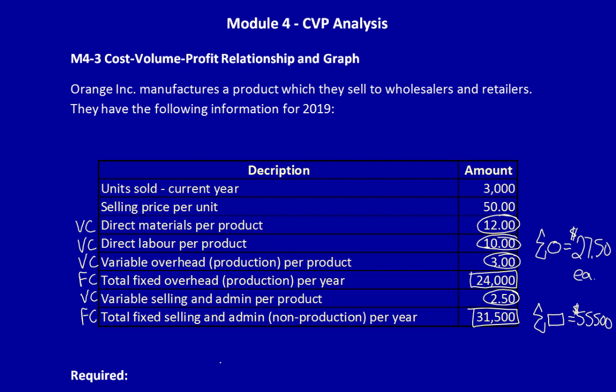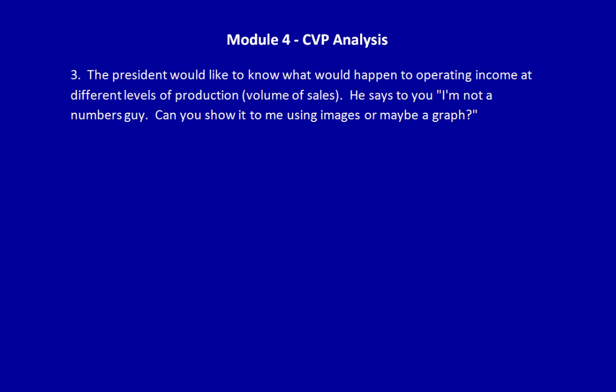Welcome back. We're continuing with M4-3 Cost-Volume-Profit Relationship and Graph. We're now answering Part 3. The President would like to know what would happen to operating income at different levels of production and volume of sales. He says, 'I'm not a numbers guy. Can you show it to me using images or maybe a graph?'